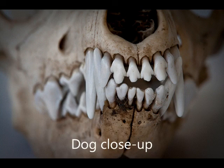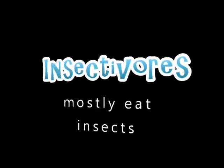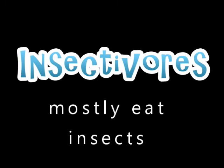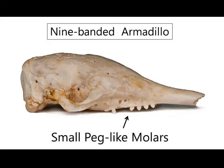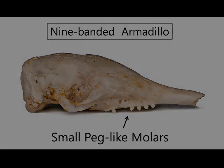Dogs and humans are a good example of omnivores. Insectivores are predators, mostly eating insects. Whether they have molars, premolars, canines, or incisors, all the teeth in their mouth tend to look similar. This makes sense because they usually eat their insect prey whole, so they don't need specialized teeth for tearing and chewing.